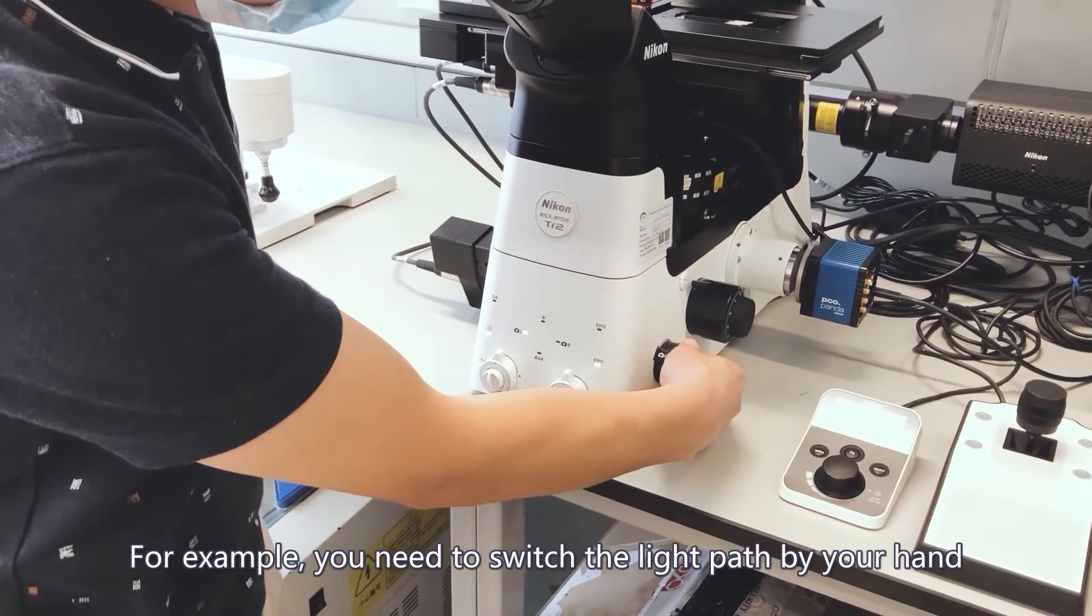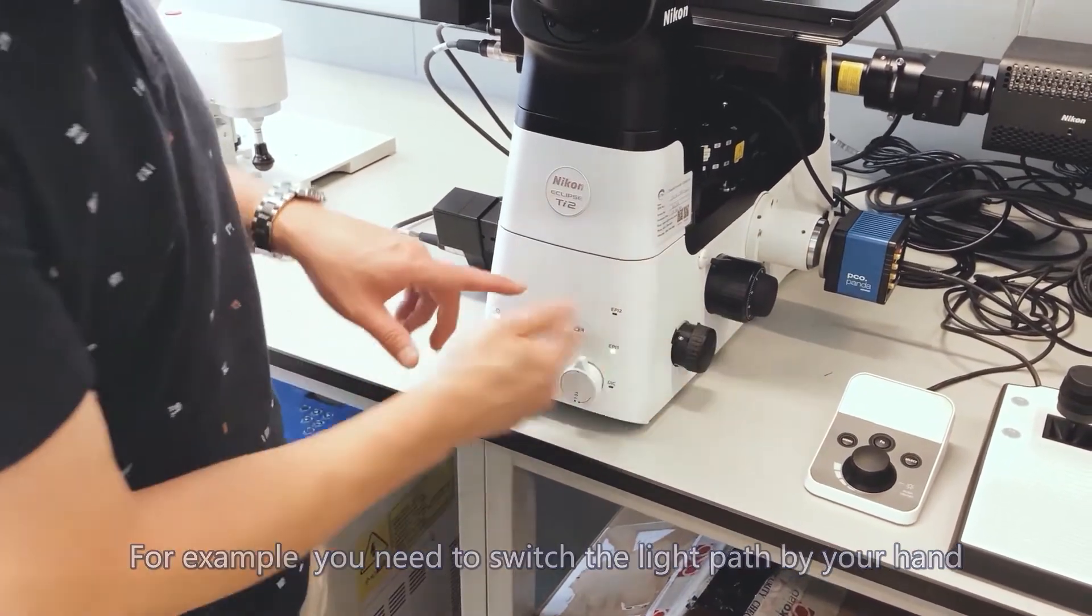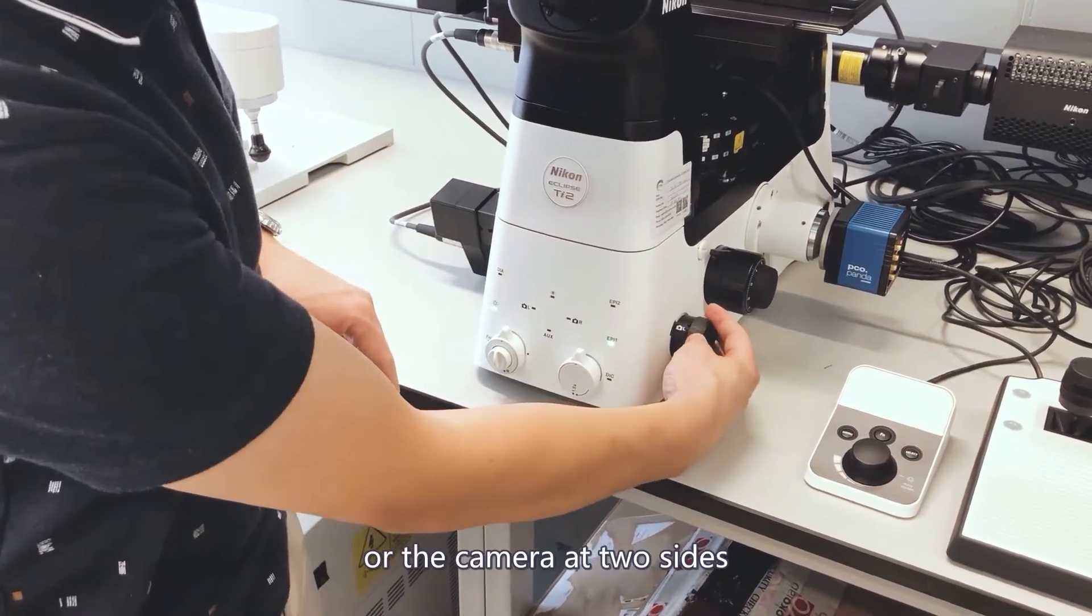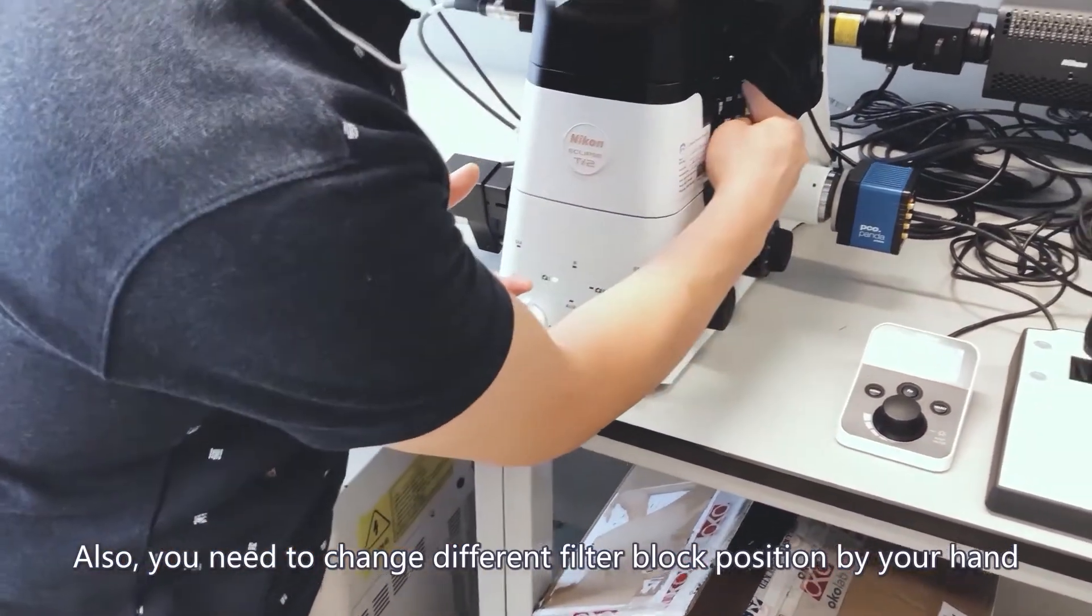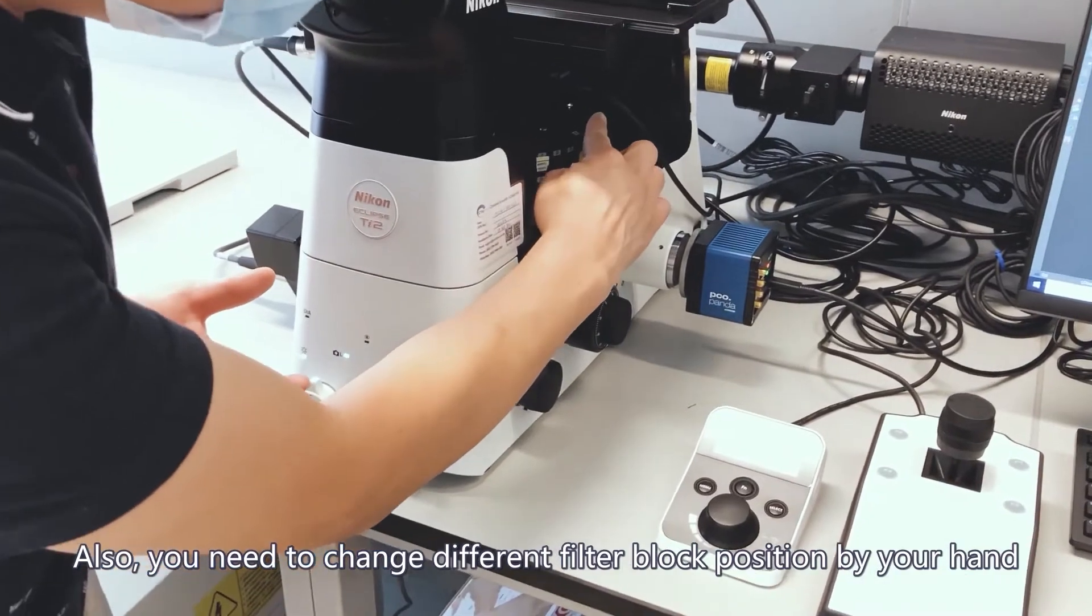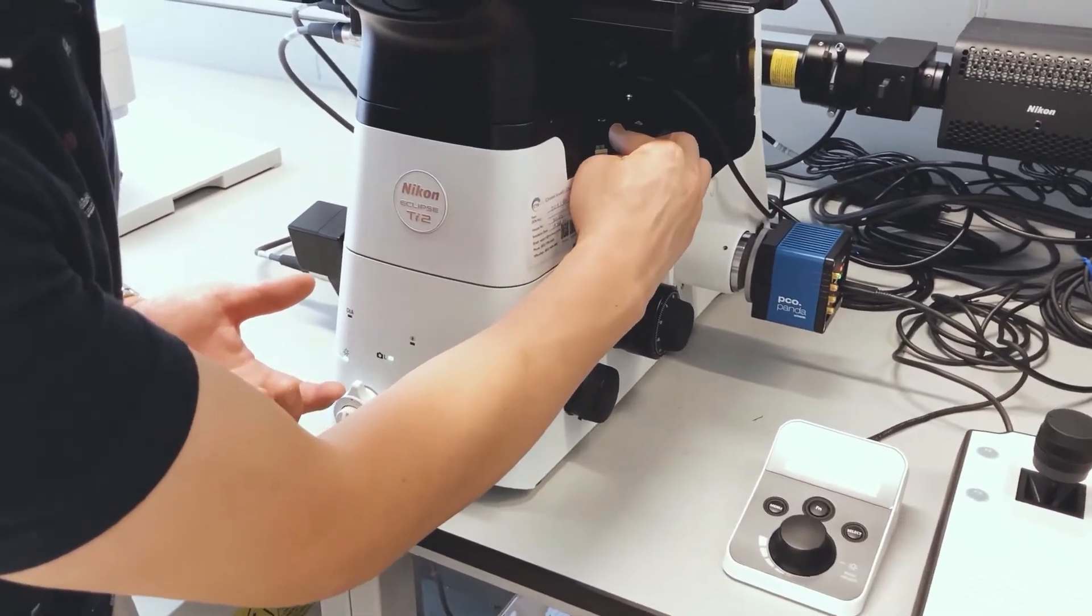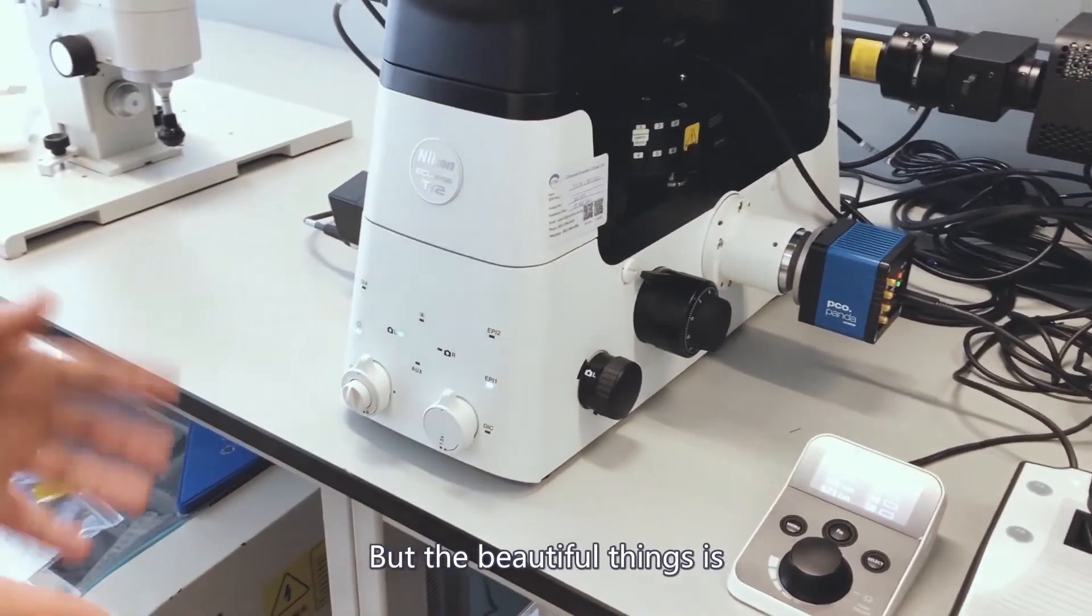For example, you need to treat the light path by your hand, for example eyepiece or the camera at the sides. And also you need to change different filter turret positions by your hand.